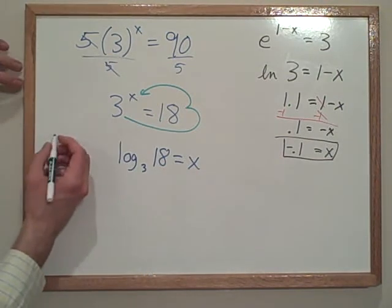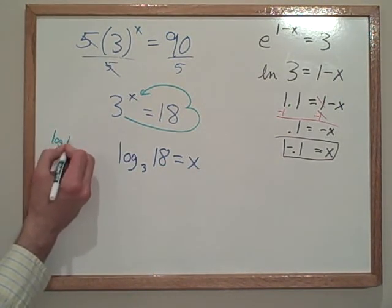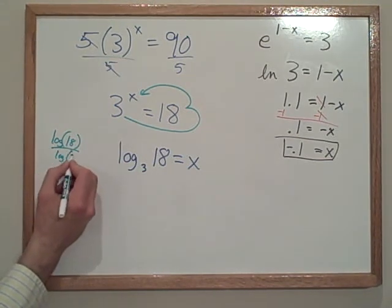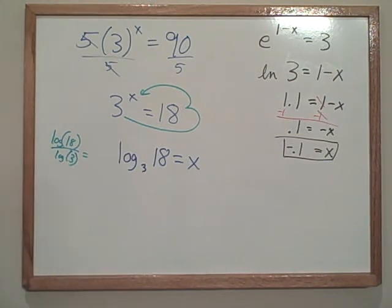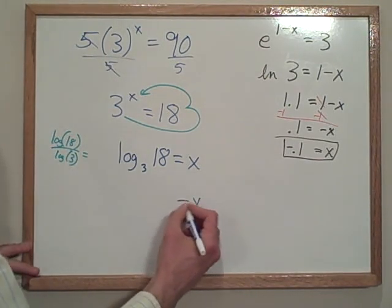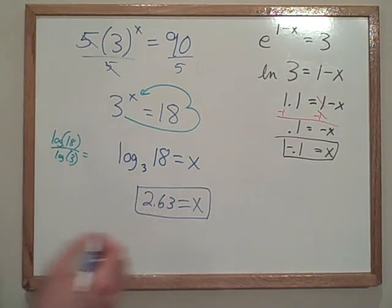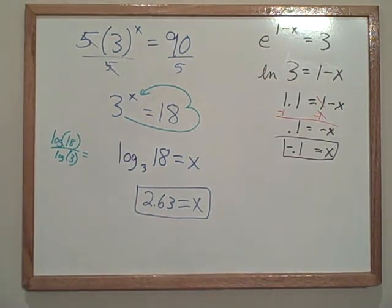Here's what we'll type in the calculator. We're going to type log of 18. Parentheses automatically pop up. Divided by log of 3. And when we type that in the calculator, that's going to give us the answer. And then we'll round to two decimal places because that's just the neat thing to do. 2.63. There we go. 2.63.